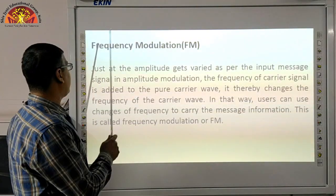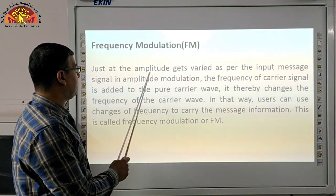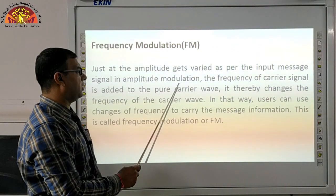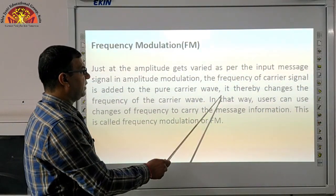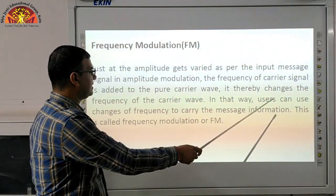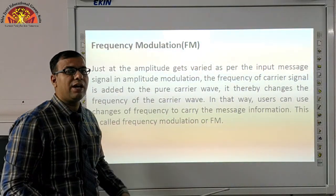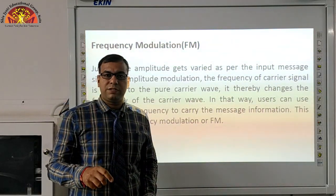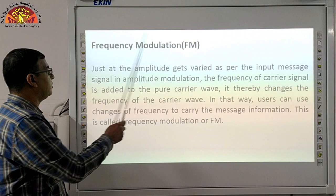Next is frequency modulation, abbreviated as FM. Just as the amplitude gets varied as per the input message signal in amplitude modulation, the frequency of the carrier signal is added to the pure carrier wave, thereby changing the frequency of the carrier wave. In that way, users can use changes of frequency to carry the message information. This is called frequency modulation or FM. An example of FM is the FM radio signal on your mobile phone — that is frequency modulation.